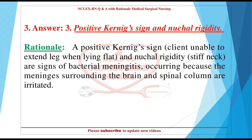Answer: 3. Positive Koenig's sign and nuchal rigidity. Rationale: A positive Koenig's sign — client unable to extend leg when lying flat — and nuchal rigidity (stiff neck) are signs of bacterial meningitis, occurring because the meninges surrounding the brain and spinal column are irritated.